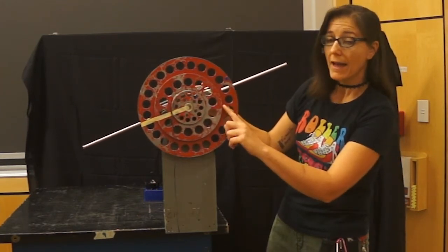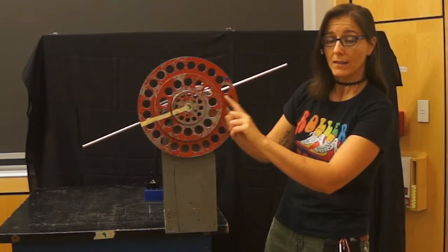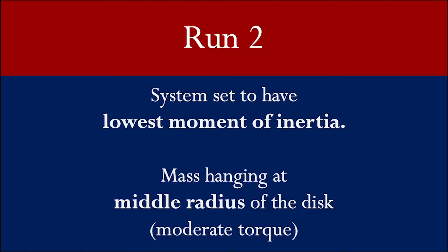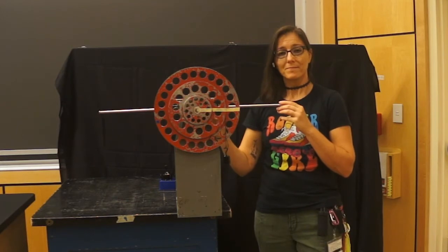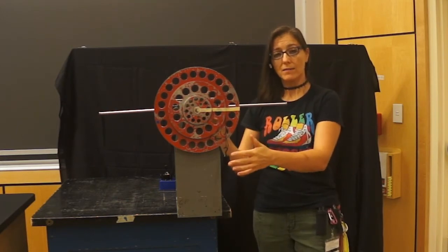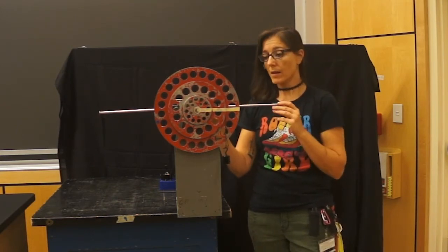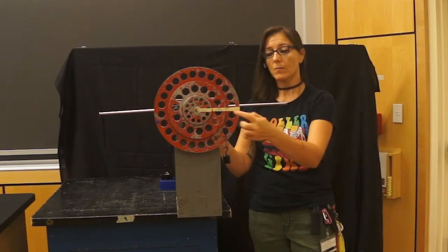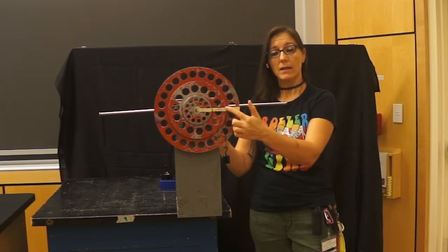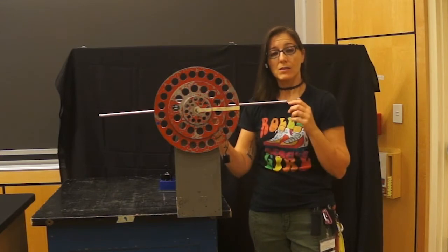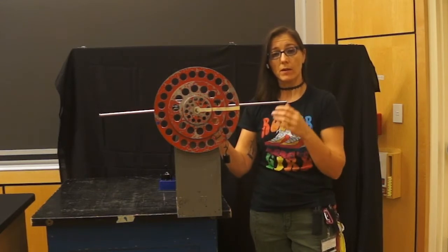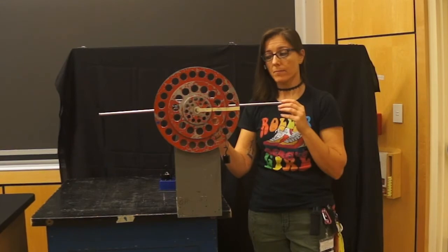Now let's look at it at the next location, at the next radius out. We have the hanging mass now, the same 100 grams, set up for the exact same system, except that now it's further out. This mass or this weight can generate a greater torque because it's at a larger lever arm. Let's watch that.